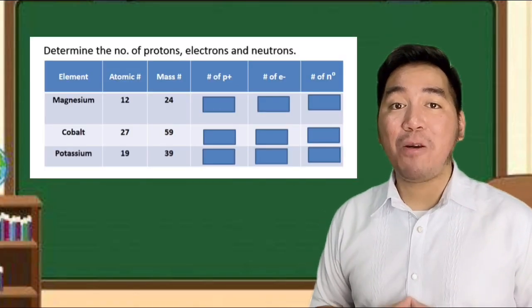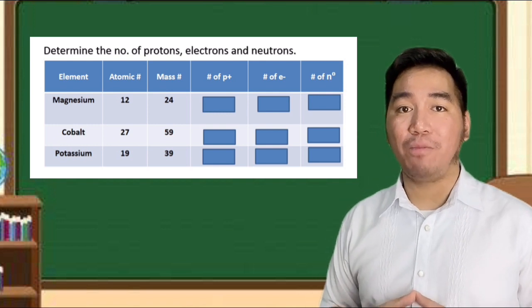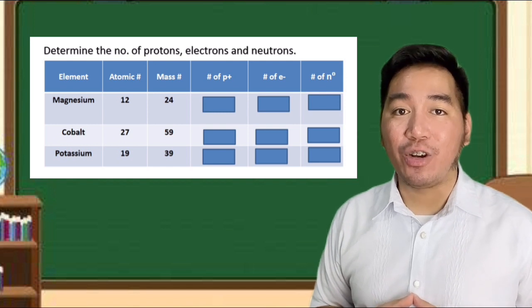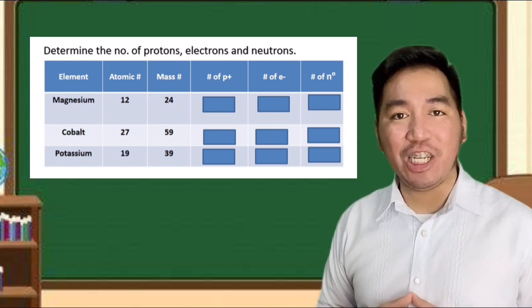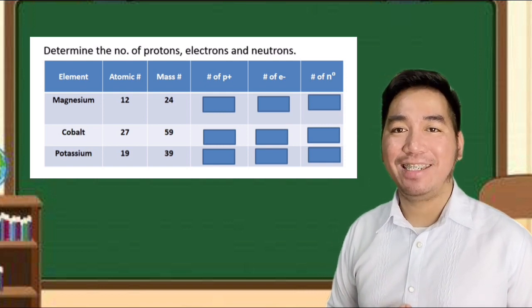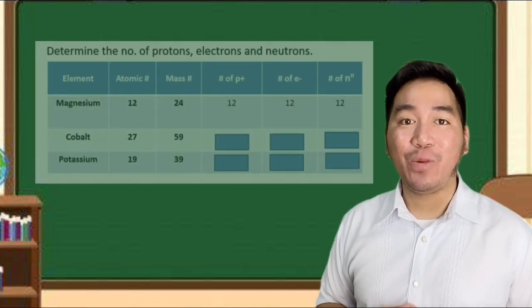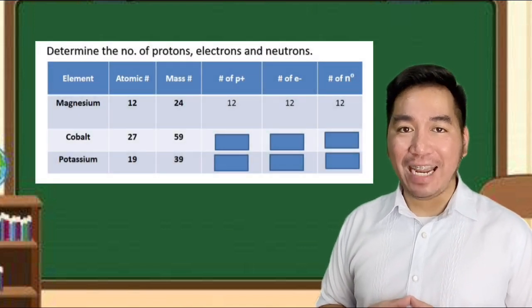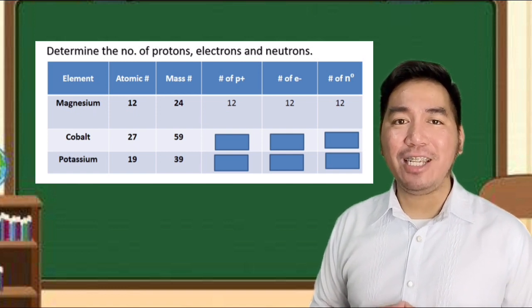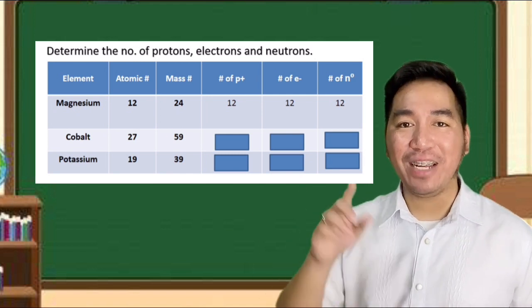Element magnesium has an atomic number of 12 and a mass number of 24. What are the number of protons, neutrons, and electrons of the element magnesium? You can pause the video for you to check your answer. What do you think the answer? The number of protons is 12. The number of electrons is 12. And the number of neutrons is also 12. Did you get the correct answer? Very good!